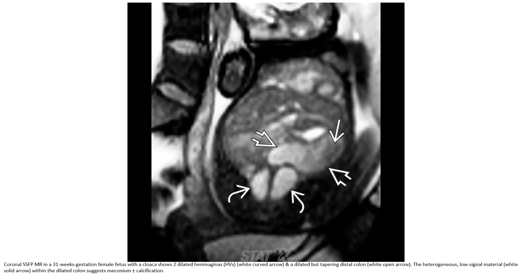This is an SSFP MRI in a 31-weeks gestation female fetus with cloaca malformation, showing two dilated fluid-filled structures and a dilated but tapering distal colon. There is a heterogeneous low signal module within the distal dilated colon, consistent with meconium plus or minus gasification.